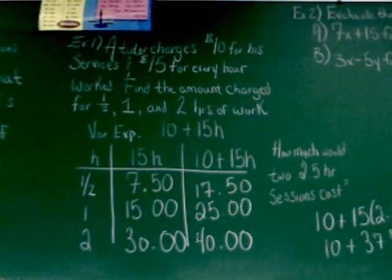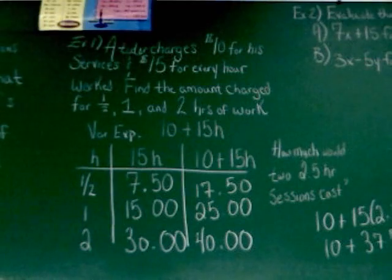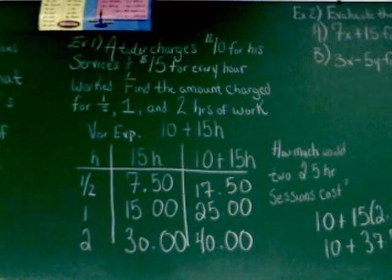What you don't want to do in this problem is say, well, if I'm working two two-and-a-half-hour sessions, that just makes five hours. So, I'm just going to change H to five. Okay? You're going to get it wrong. Well, why?